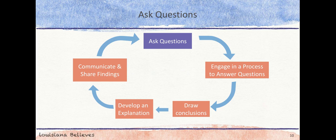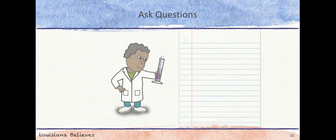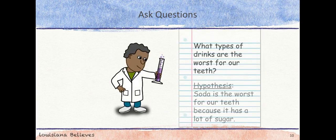A scientist will develop a hypothesis or an educated guess based on what they know and observe. For example, we may wonder, what types of drinks are the worst for our teeth? As we begin the inquiry process, we can think about this question and make predictions about the answer. We might think that soda is the worst for our teeth because it has a lot of sugar. This is called our hypothesis or our educated guess.